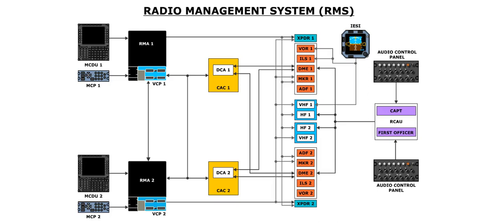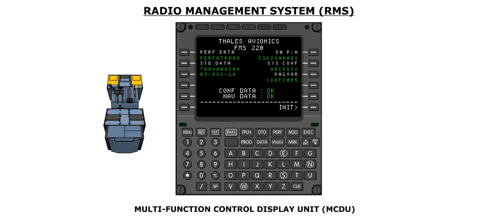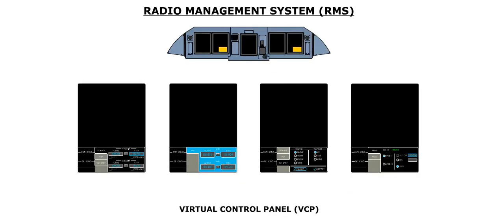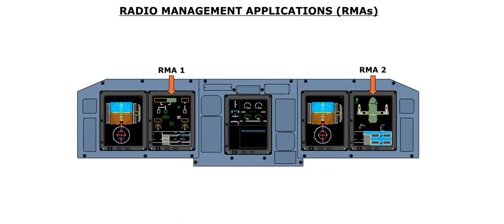The radio management system, or RMS, manages the radio communication, radio navigation, and the TCAS transponder system through multi-function control display units or MCDUs, multi-function control panels or MCPs, and virtual control panels or VCPs. The radio management application, or RMA, manages the radio navigation and communication equipment and displays communication and navigation settings on the different displays. The radio management system incorporates two redundant RMAs, hosted in display units 2 and 4.